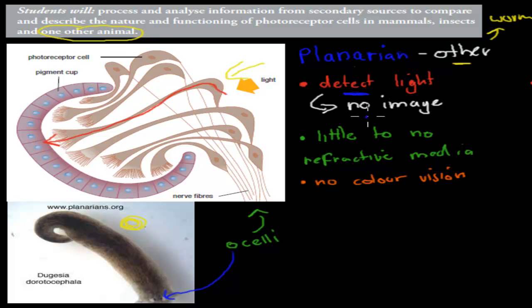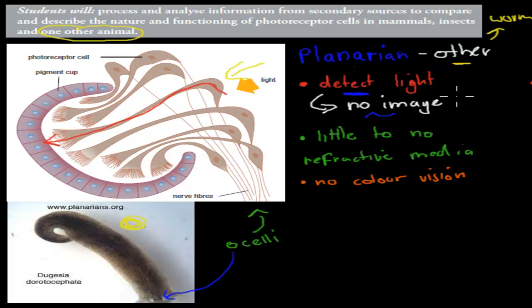So there's no actual image — all it sees is light on or light off. You can imagine when you close your eyes and you're in the dark, if someone switches on the light, you can sense the light has been switched on — you can tell the light is on, but you see no image because your eyes are closed. That's how a planarian sees the world: either light being on or light being off. But it can also actually tell where the light is coming from as well.